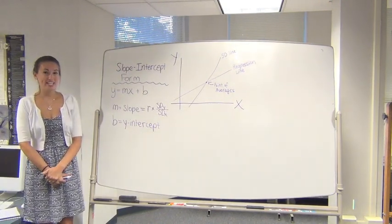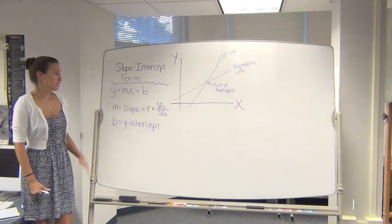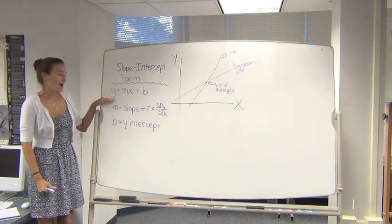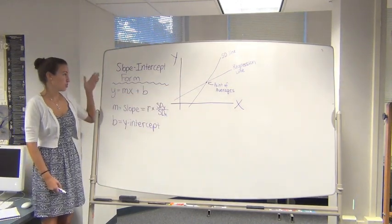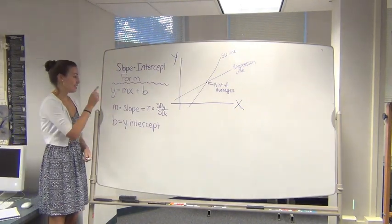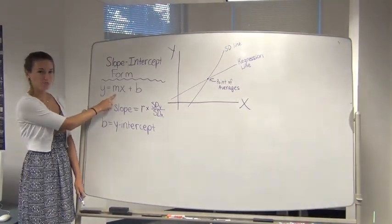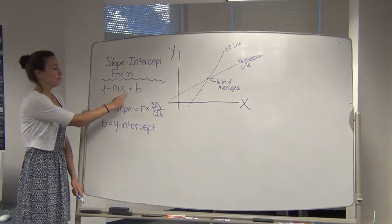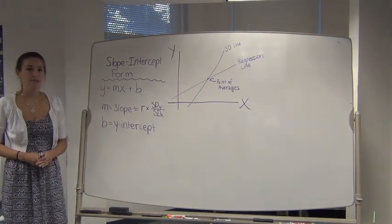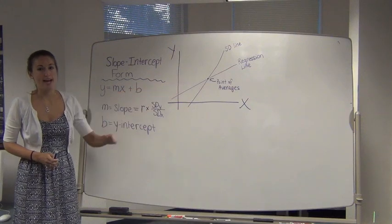Since our regression line is just a straight line, we know that it's going to have the form y equals mx plus b, which you may know as slope-intercept form. This says that for a value of y, that equals m, which is our slope, times an x value, plus b, which is our y-intercept. And y-intercept is just where the regression line crosses the y-axis.